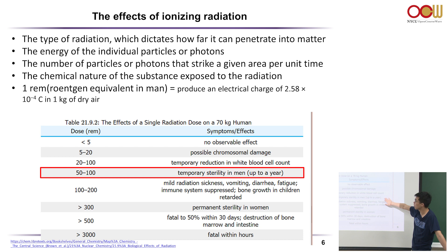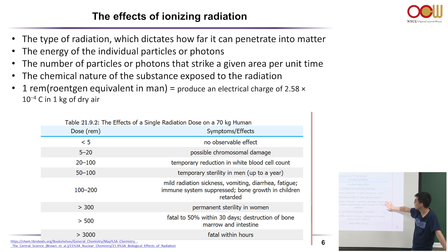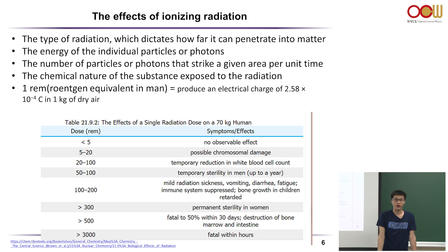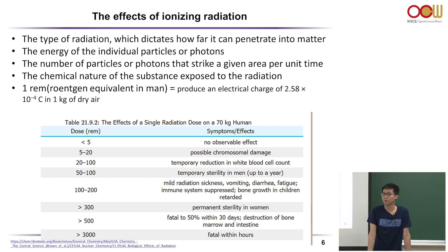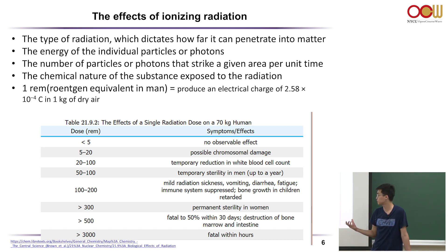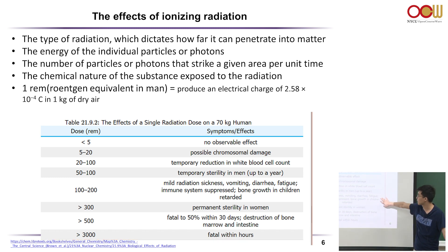Going a little higher in radiation dosage can cause sterility in men, and even higher causes sterility in women — meaning you cannot reproduce. People working at nuclear plants are subject to very strict laws about how many hours they can work per year, because they're exposed to high amounts of radiation. If exposed to a lot, it causes death. This amount is fatal within hours.